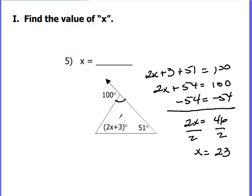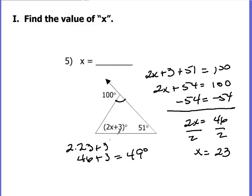To find the actual measure of the angle, take x = 23 and plug it in: 2(23) + 3 = 46 + 3 = 49 degrees. That's what the entire angle equals — not just x, but the whole expression. You'll need to know how to do that for your assignment.